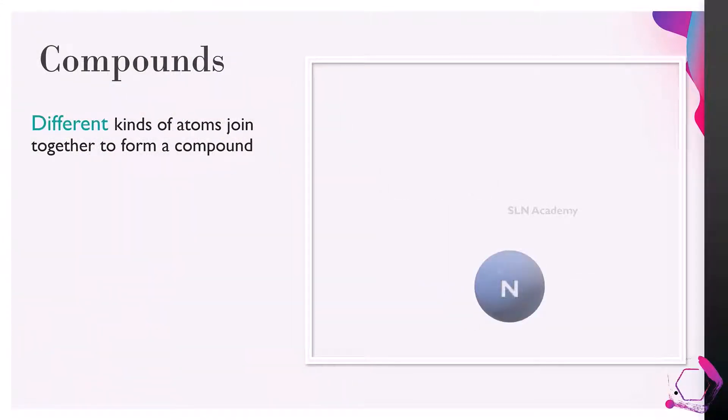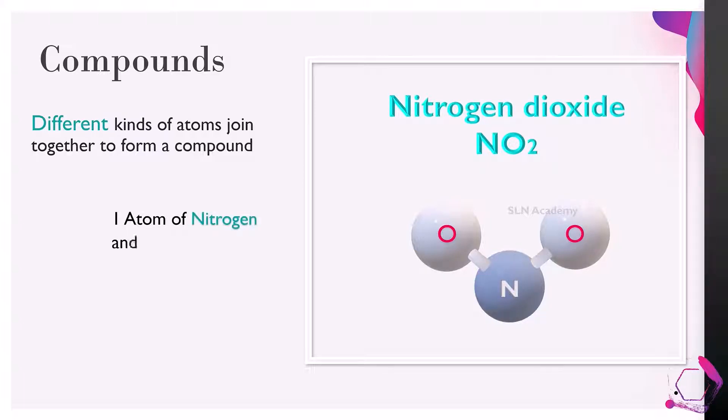Examples of compounds are nitrogen dioxide. It is made up of two different kinds of atoms and is represented by NO2. This means it has one atom of nitrogen and two atoms of oxygen.